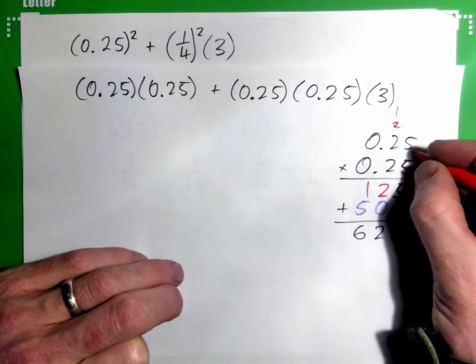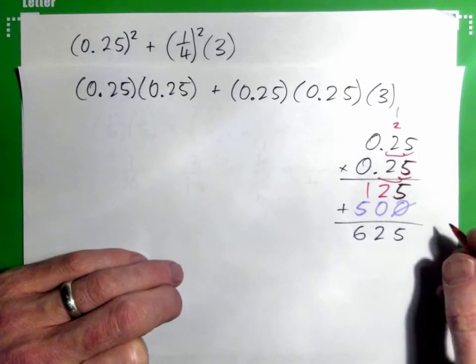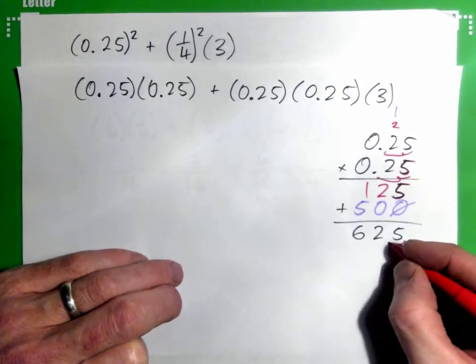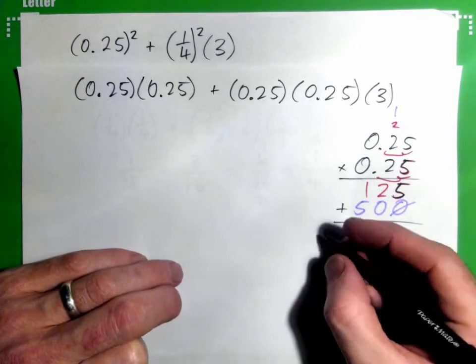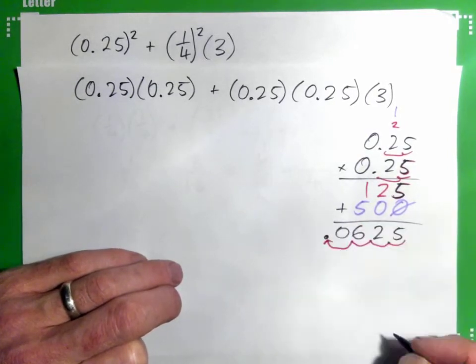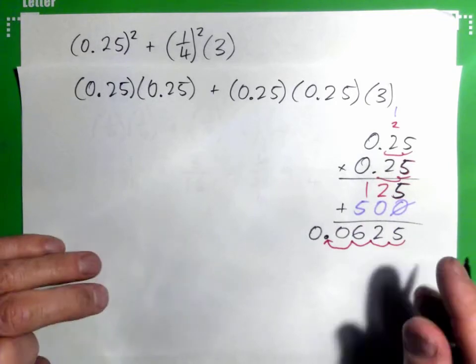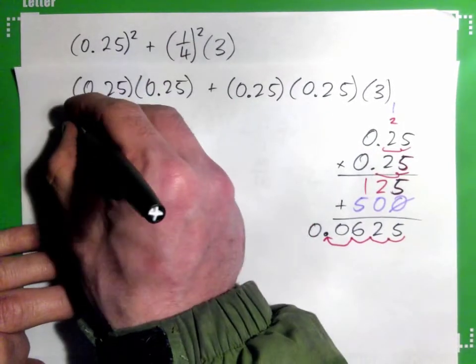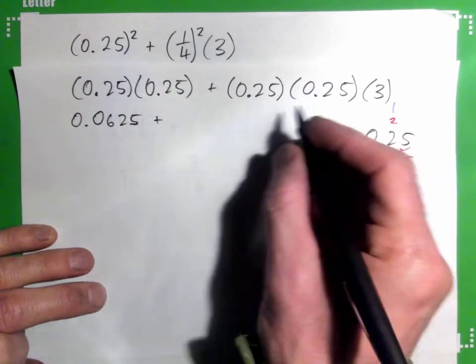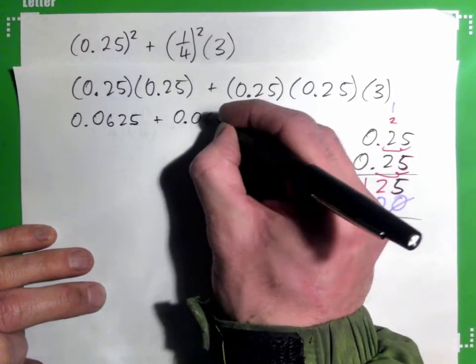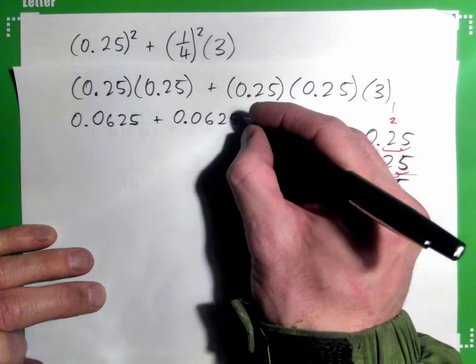And add these guys and we get a 5 and then a 2 and a 6. But we have 1, 2, 3, 4 decimal places in the question, so there should be 1, 2, 3, 4 in the answer. So, the decimal point goes there and we put a 0 here, so that's 0.0625. So, this times this is 0.0625. And then this times this is 0.0625.